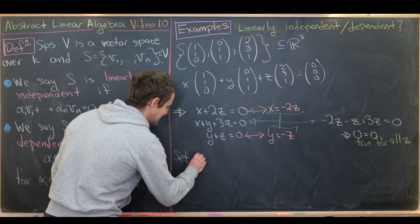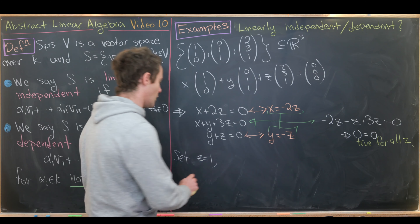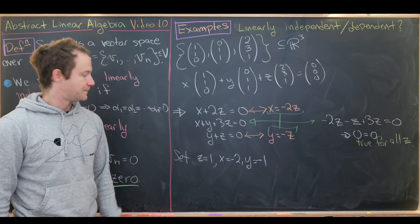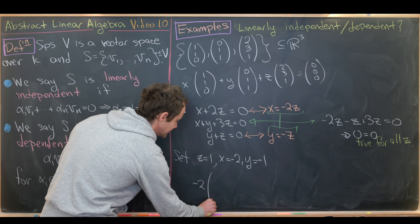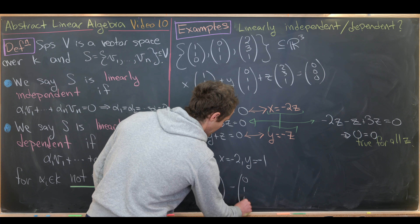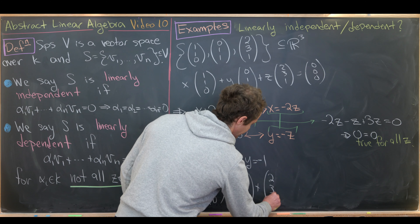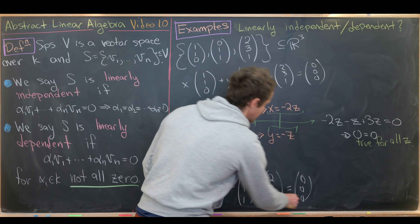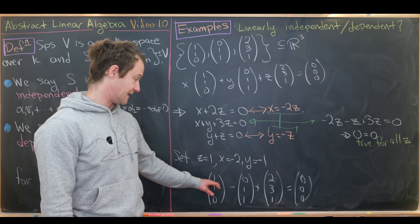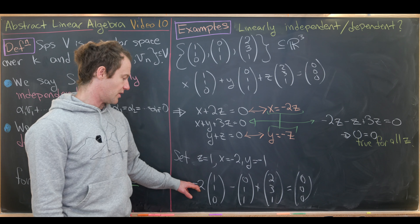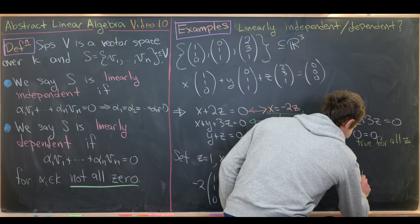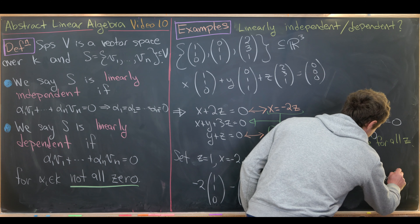Setting z = 1 gives x = -2, y = -1. So -2·[1,1,0] - 1·[0,1,1] + 1·[2,3,1] = 0 is a non-trivial linear dependence relation. This set of vectors is linearly dependent.